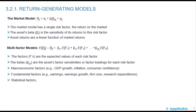The first model — the market model — has a single risk factor, which is the return on the market. The asset's beta is the sensitivity of its returns to this risk factor. Asset returns are a linear function of market returns.